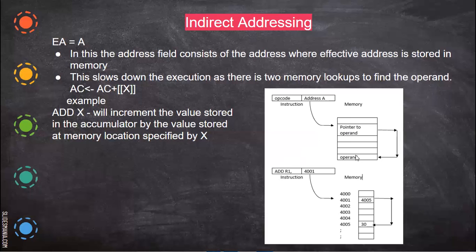It has to go there in order to get the data. For example, add r1 4001 means it goes there. In 4001, there is a memory location, not the data. So it will go there, and then at 4005, the actual data is there. This data is then transferred to r1. This is an example of indirect addressing.